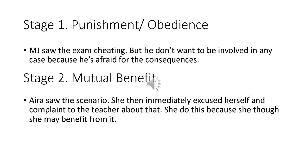Stage 1, punishment or obedience: MJ saw the exam cheating but didn't want to be involved in any case because he was afraid of the consequences. MJ didn't take part in cheating and also didn't want to report it because he would be implicated and would surely receive punishment or other consequences.